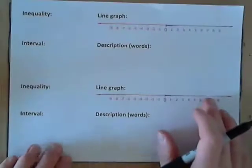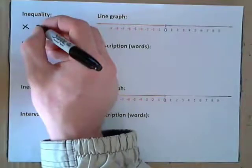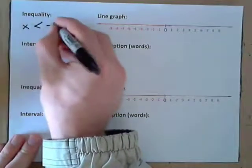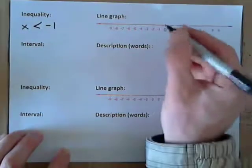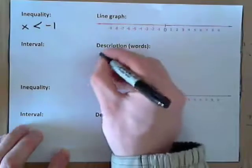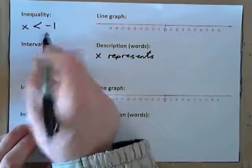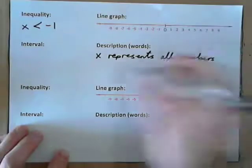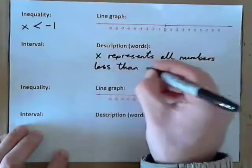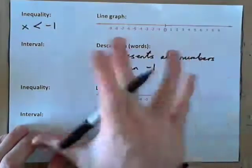Let's do another one. If you had x is less than negative 1. In words: x represents not just one number, but a whole range of numbers — all numbers less than negative 1.